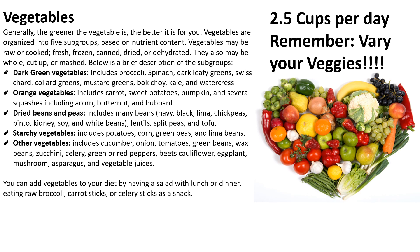Dried beans and peas includes many beans: navy, black, lima, chickpea, pinto, kidney, soy, and white, as well as lentils, split peas, and tofu. Starchy vegetables include potatoes, corn, green beans, and lima beans. And then there's the other category — everything that doesn't fit into one of the others.